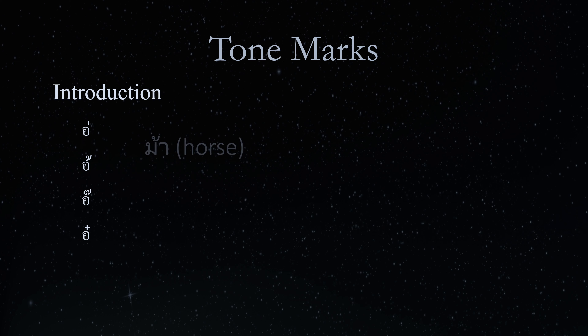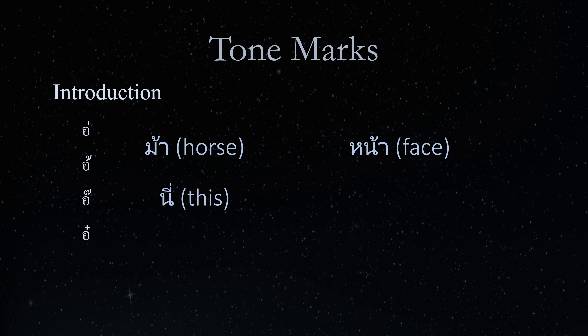For example, MAI in the high tone meaning horse, and NA in the falling tone meaning face. If a vowel or one of the symbols of a vowel is written above the consonant, the tone mark is written at the top right corner of that vowel or symbol. For example, NI in the falling tone meaning this, and MI in the low tone meaning noodles.